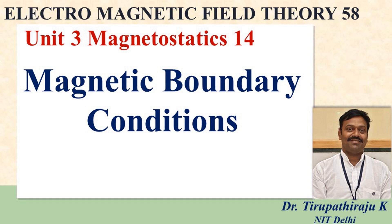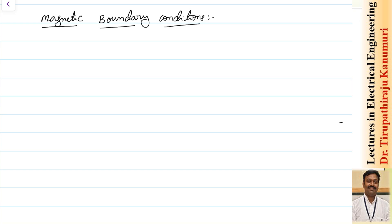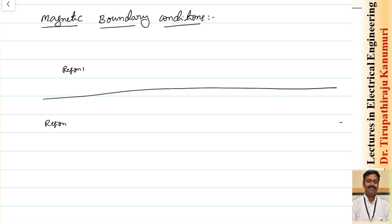Today we are going to discuss magnetic boundary conditions. I am taking an interface between two types of medium: region one above Z greater than zero with permeability mu one, and region two with permeability mu two. The magnetic flux density B2 is moving from medium two to medium one, making an angle theta two with respect to the normal component. When it crosses the interface, it changes its angle to theta one in region one.